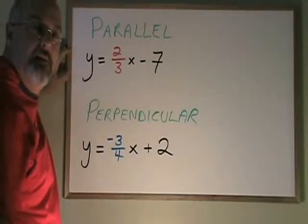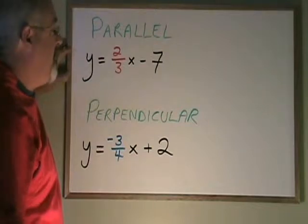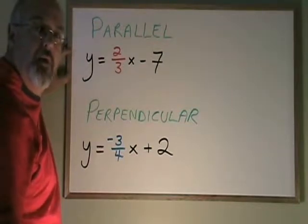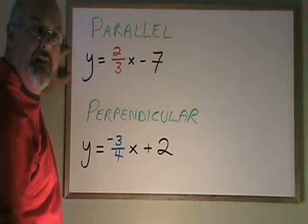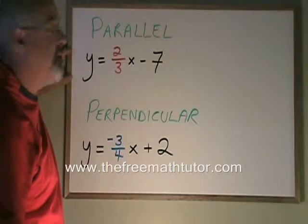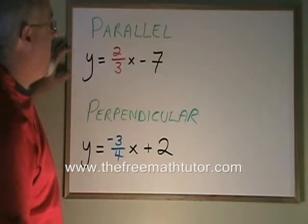Parallel lines have the same slope and perpendicular lines have slopes which are the negative reciprocal of each other. Let's see what this looks like when we're given an equation.